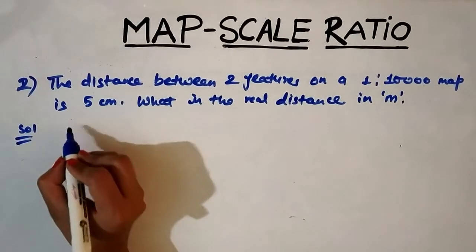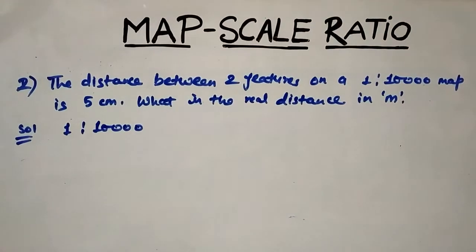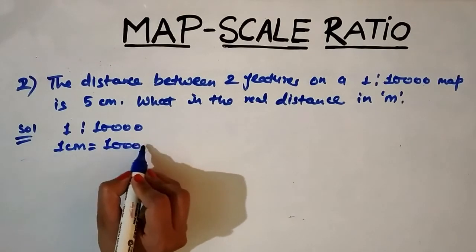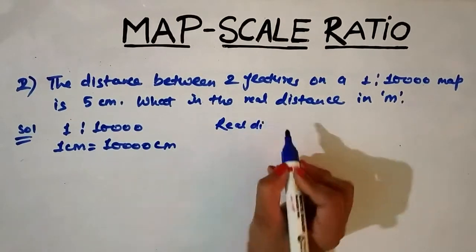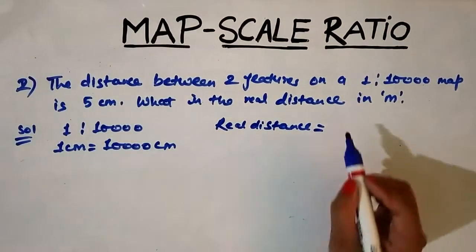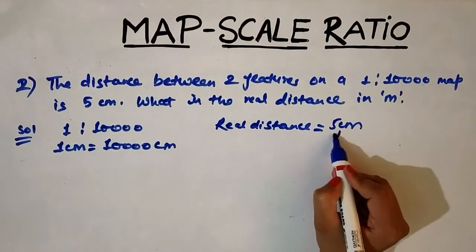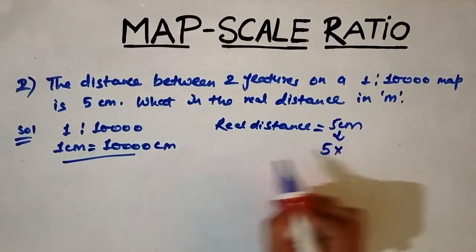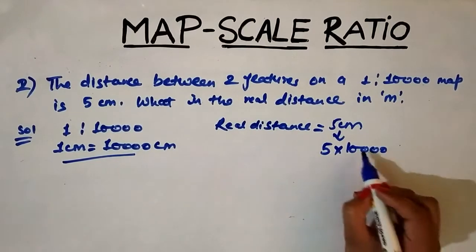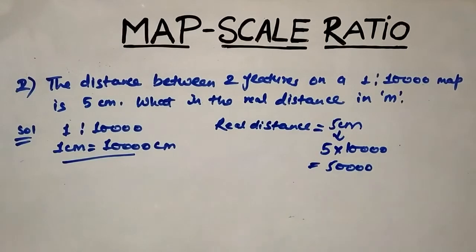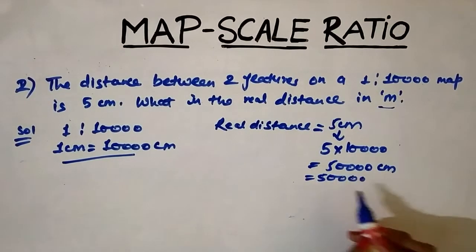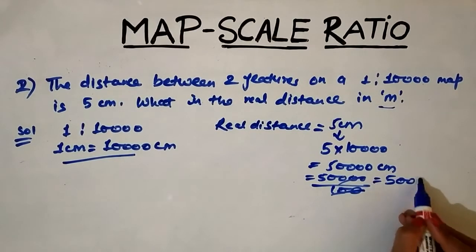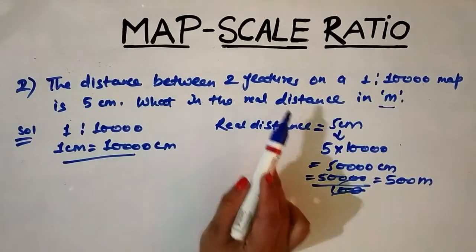The scale here is 1:10,000, which means one centimeter on the map equals 10,000 centimeters in reality. The distance on the map is 5 centimeters. To convert this using the scale, we multiply 5 by 10,000, giving us 50,000 centimeters. This is the real distance, but we need the answer in meters. So we divide by 100 and get 500 meters.